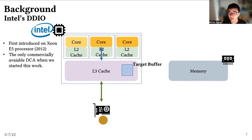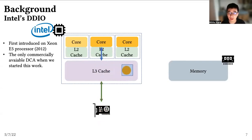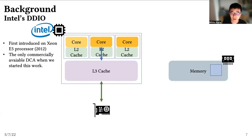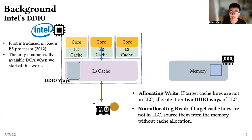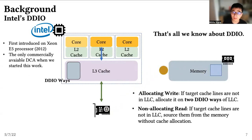DDIO was introduced to Intel's server processors in 2012 and has its own distinctive rules. If the target cache line resides in the cache, NIC reads from or writes to the cache and bypasses memory. But we are not always so lucky. If NIC wants to write to an address not in the cache, it will allocate cache lines in two specific ways in the last-level cache, so the cache will not be polluted by overflowing network traffic. If NIC wants to read from an address not in the cache, it will source from memory without any allocation in the cache — reasonable because we usually will not read sent packets again. That's all we know about DDIO, and we will later see that there are more undocumented details than documented.